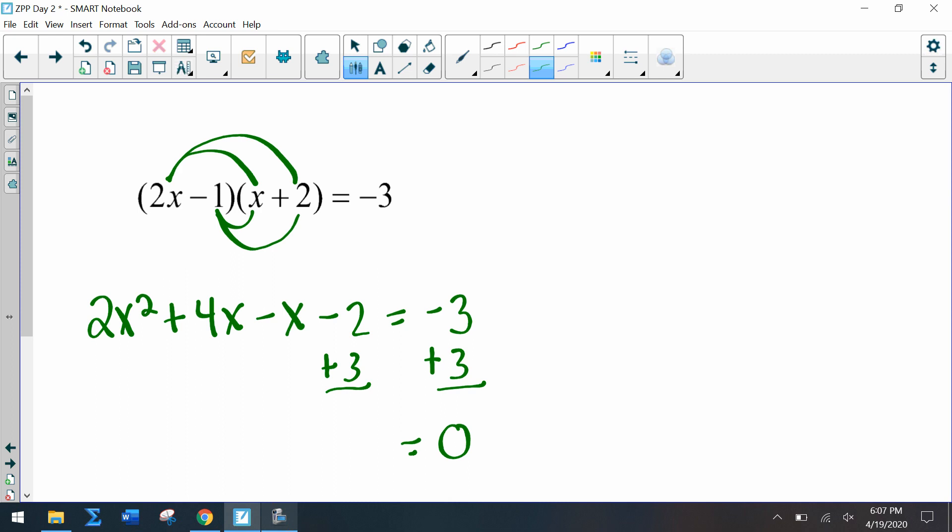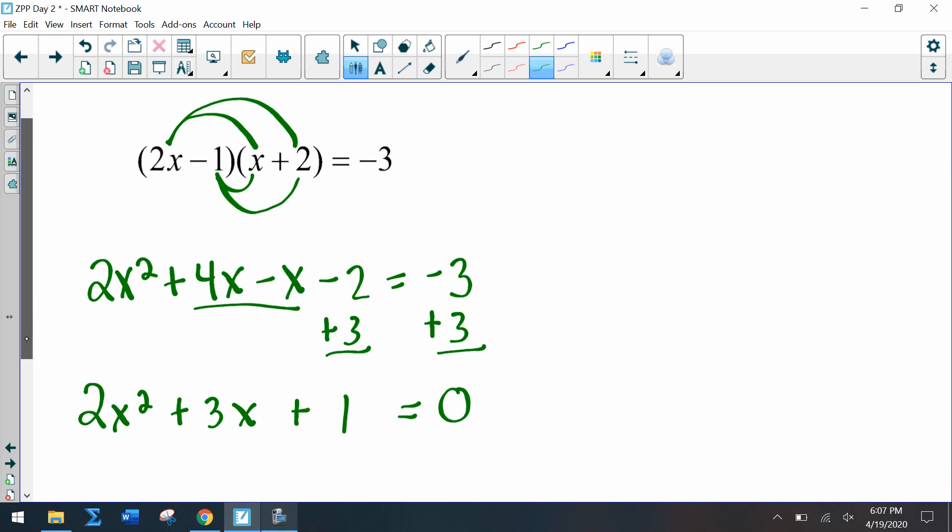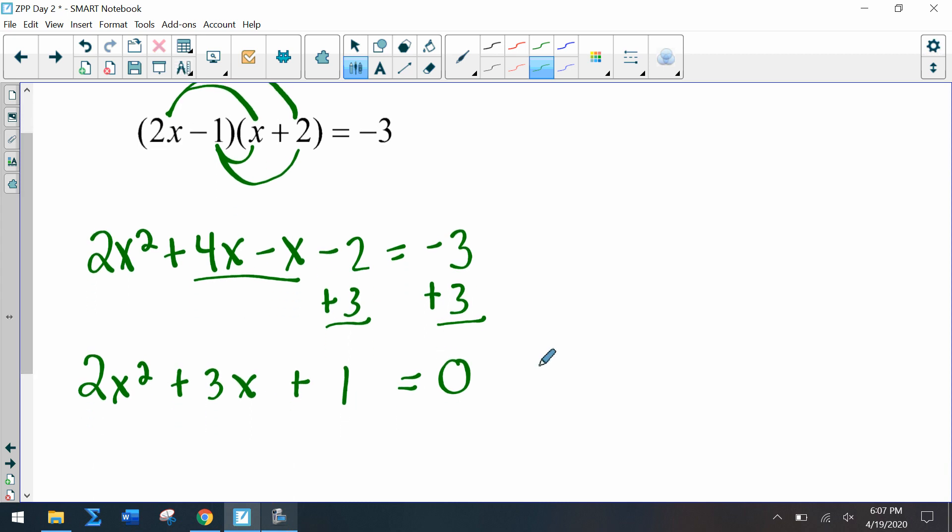And now we have to add 3 to both sides, so we have 2x², and then when I combine here we have + 3x + 1, and that's what we have to now use the zero product property with.